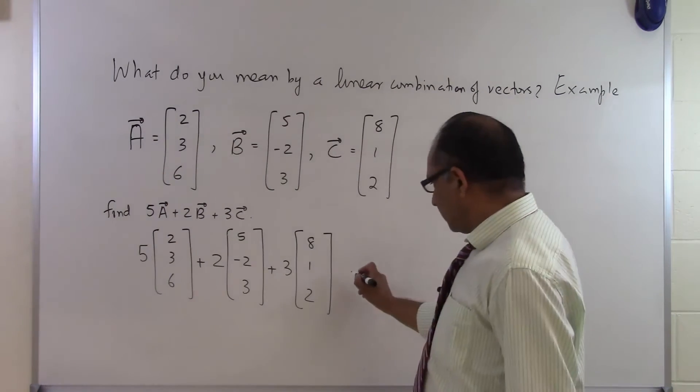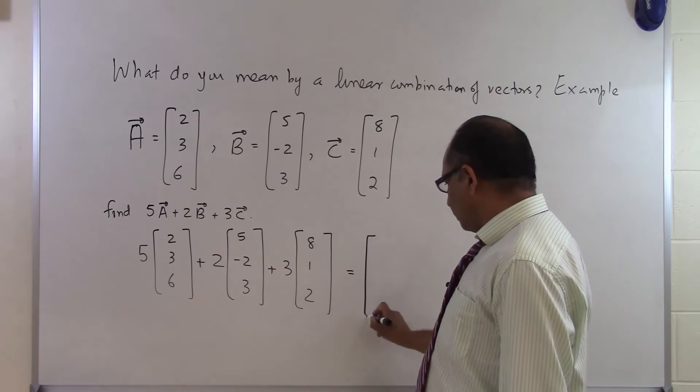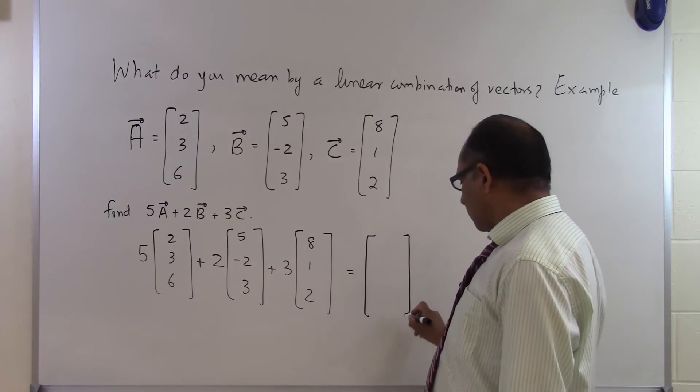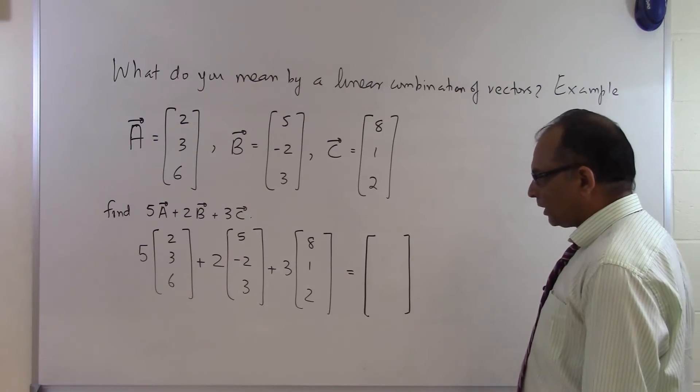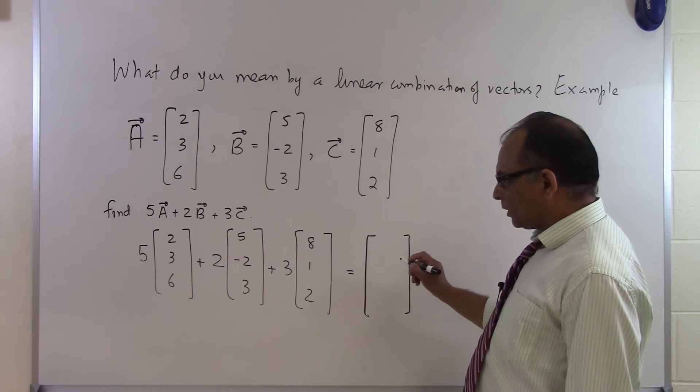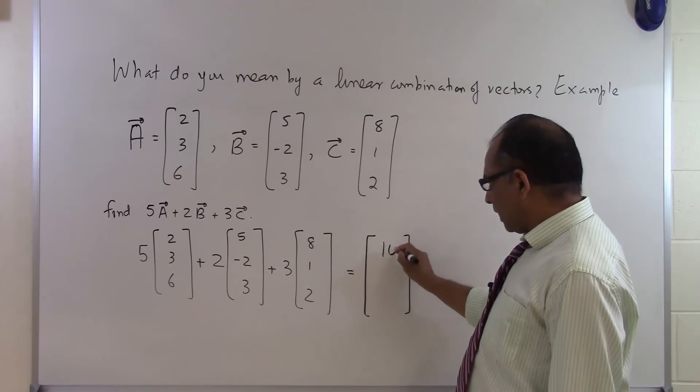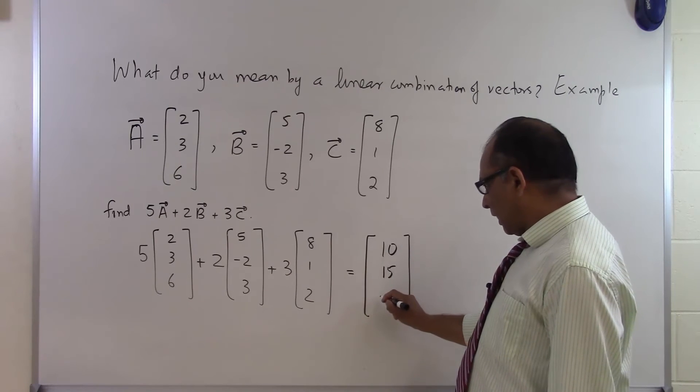So as we have mentioned that when we multiply a vector by a scalar each component gets multiplied by that quantity. So the first 5 times A becomes 10, 15 and 30.